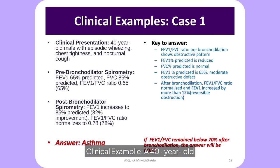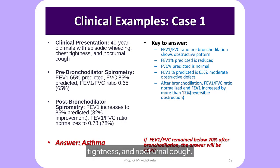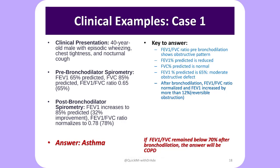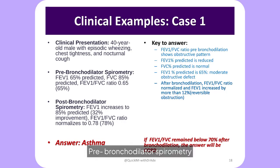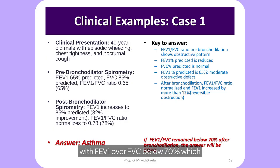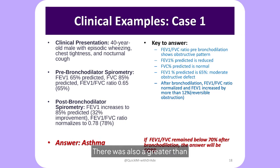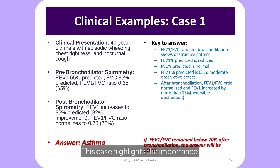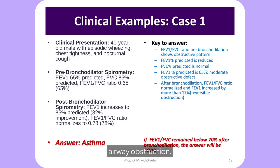Clinical example one: a 40-year-old male with episodic wheezing, chest tightness, and nocturnal cough. Pre-bronchodilator spirometry shows an obstructive pattern with FEV1/FVC below 70%, which normalizes post-bronchodilator, with greater than 12% improvement in FEV1. This case highlights the importance of bronchodilator testing in diagnosing reversible airway obstruction consistent with asthma.